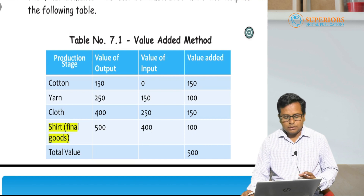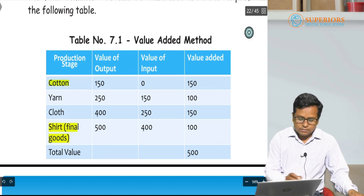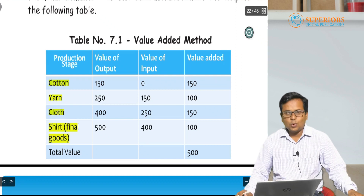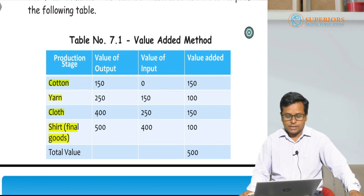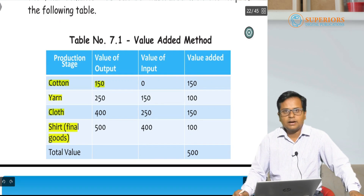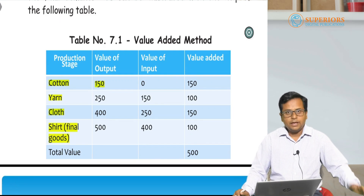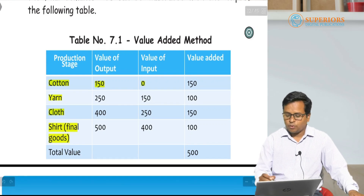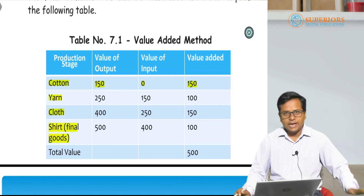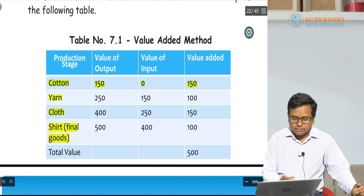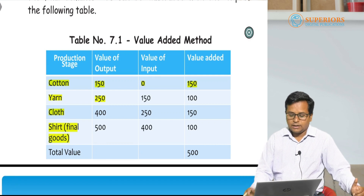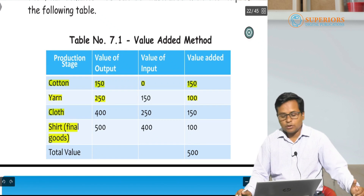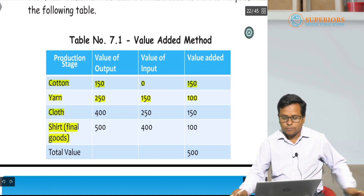Before producing the shirt, there are three different stages of production shown in this example. At the first stage, a farmer produced cotton and its value is rupees 150. The input value is zero, so the value added is rupees 150. When the cotton is converted into yarn, its value becomes rupees 250, and the value added at this second stage of production is rupees 100.